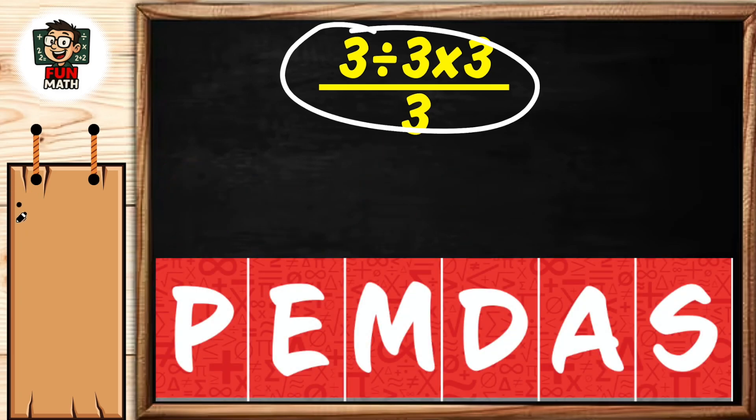P stands for parentheses, E stands for exponent, M stands for multiplication, D stands for division, A stands for addition, and S stands for subtraction.